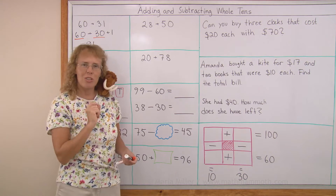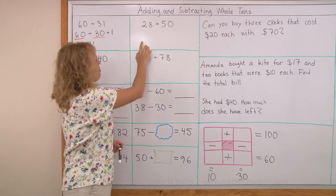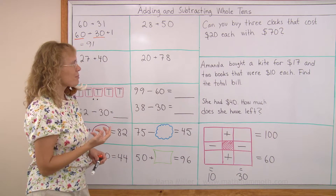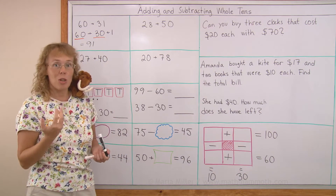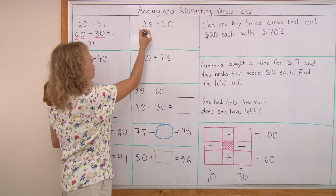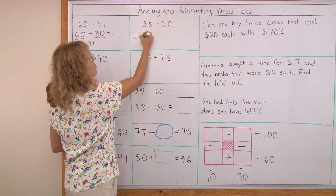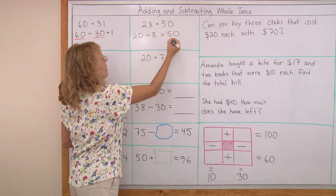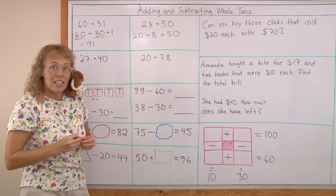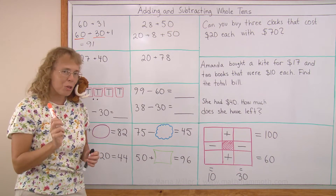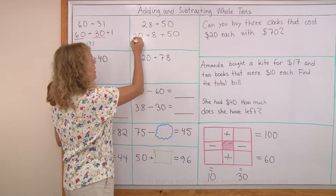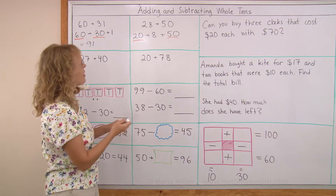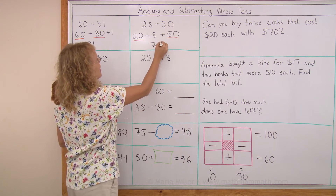Let's try another one — or you try it on your own. 28 plus 50. 50 is just 5 whole tens. So I take 28 and break it into 2 parts: 20 and 8. 20 plus 8 plus 50. I first add those whole tens: 20 and 50 would make 70. And then there's the 8, so we get 78.